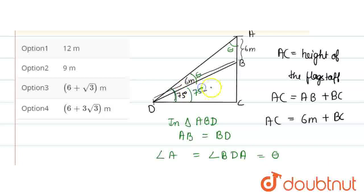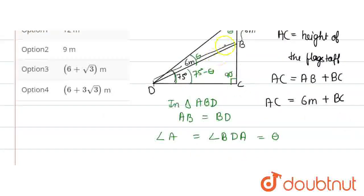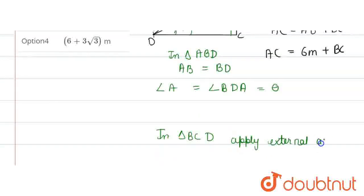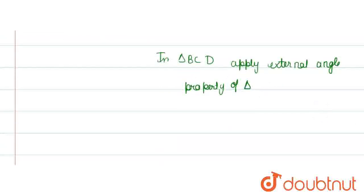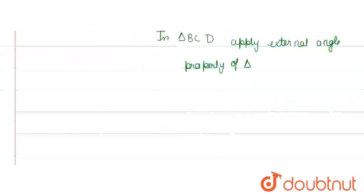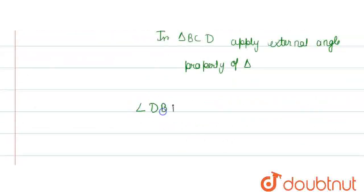In triangle BCD, apply external angle property of triangle. Angle DBA will be equal to 90 degrees plus 75 degrees minus theta. So we will solve this, which will be equal to 165 degrees minus theta. So this is the angle DBA value.